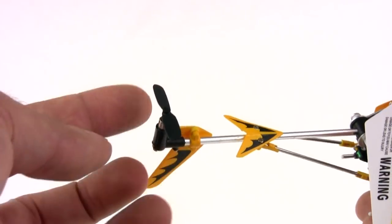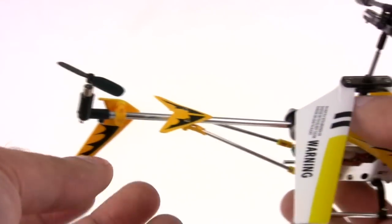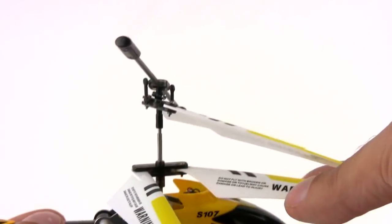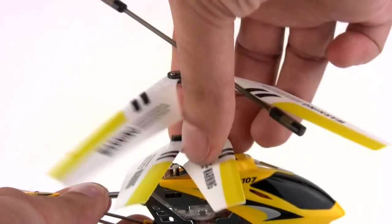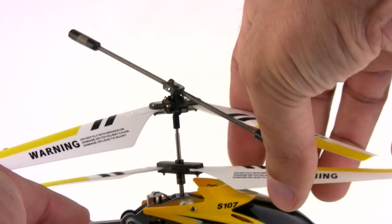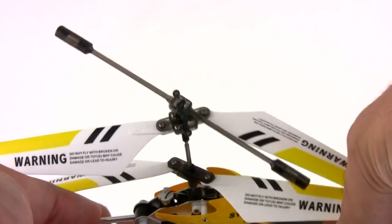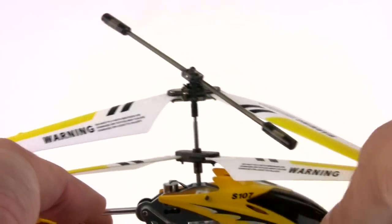Back on the tail boom you have a direct drive vertically oriented tail rotor which gives you your forward and reverse flight. It's a coaxial design which means you have twin counter-rotating main blades and these are free-floating. They actually balance themselves out once they get spinning. Having them freely hinged like this helps to reduce damage in the event of a crash or just hitting something lightly on the side.